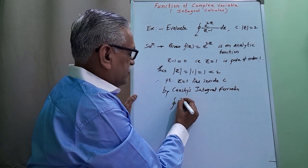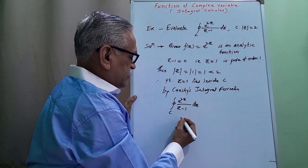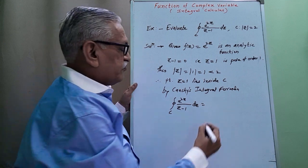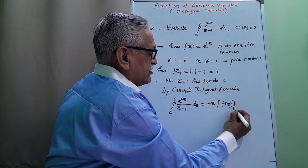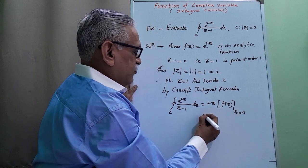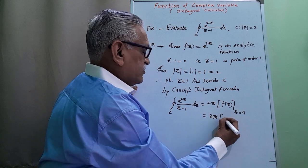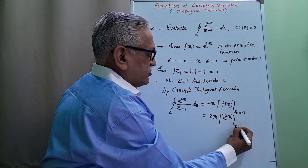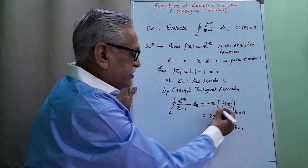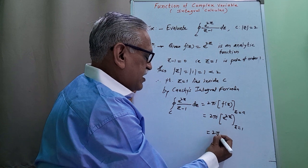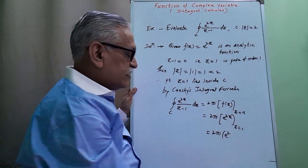The contour integral of e^(2z) divided by (z minus 1) with respect to z over C is equal to, as per the formula, 2πi into f(z) at z = a. Substituting f(z) = e^(2z) and a = 1, we substitute z = 1 to get 2πi multiplied by e^(2×1) = 2πi·e².